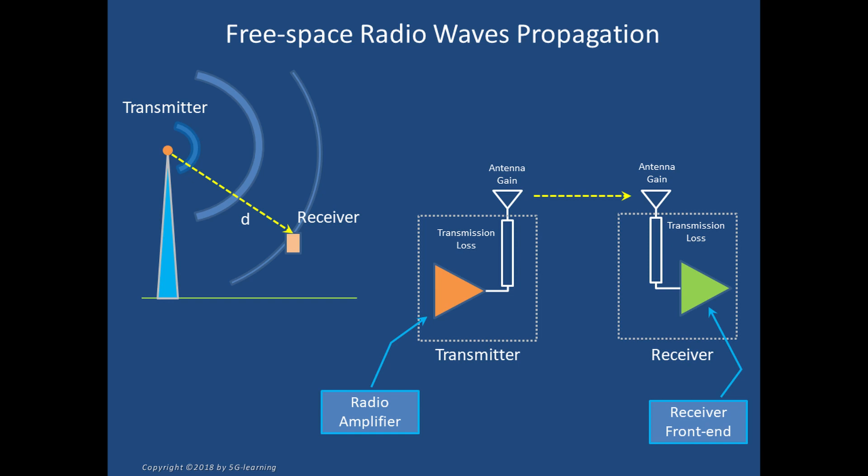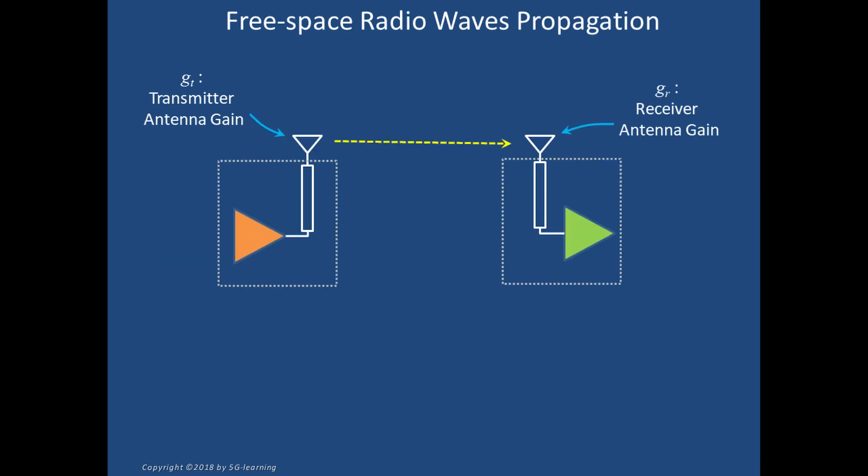The signal captured by the receiver antenna is attenuated by its conduction line; the resulting signal feeds the receiver front end. Let's call g_t and g_r the gains of the transmitter and receiver antennas, L the transmission losses in the antenna lines, lambda the wavelength of the transmitted signal, and d the distance between the transmitter and the receiver.